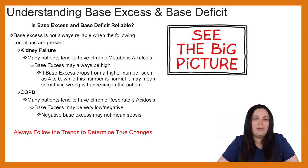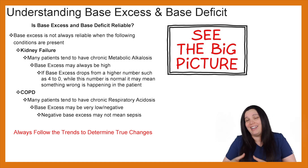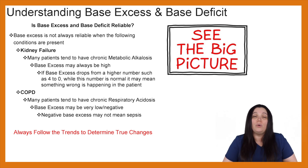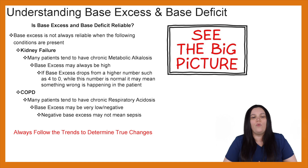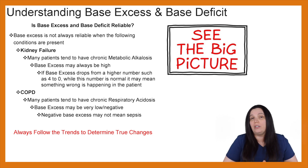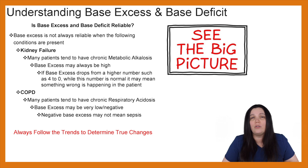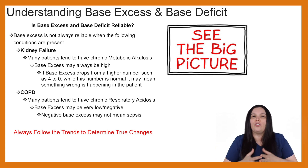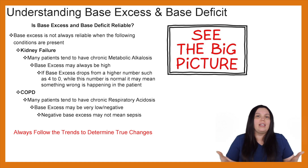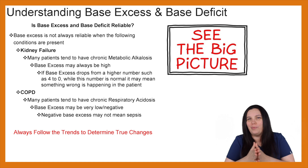When it comes to our COPD patients, many tend to have chronic respiratory acidosis, so base excess may be very low or even negative. A negative base excess may not necessarily mean sepsis. You have to look at the overall big picture and always follow the trends to determine what the true changes really are. Even though values might fall back into normal, that might not be their normal — especially for our COPD patients. They might have a normal CO2 of 50; if we drop them to 40, even though that's a normal value, that's not good — they're CO2 retainers. Always follow the trends and make sure you're not basing treatment on one particular lab value.